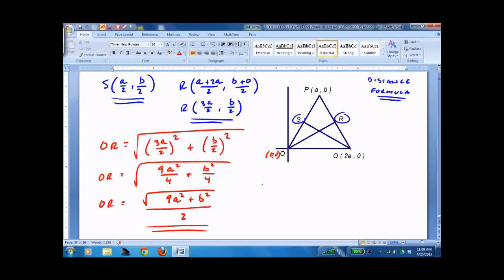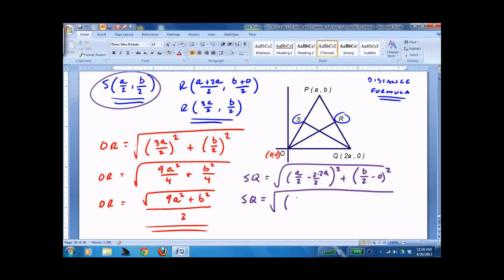SQ might be. So let's do SQ. Big square root. We will subtract from S to Q. Just because we've got that 0 there might make it easier. a over 2. This is s. Minus 2a. I'm going to leave a little space here because I'm going to have to multiply that to get a common denominator. squared plus b over 2 minus 0 squared. Now I know I needed 2 on the bottom here, so I'll multiply it by 2 over 2.